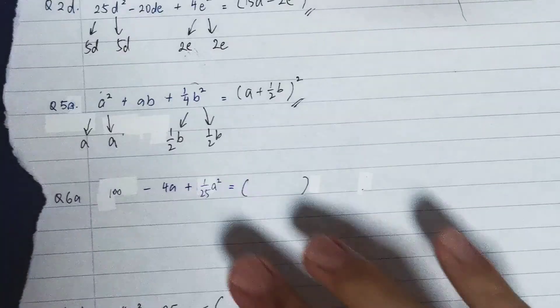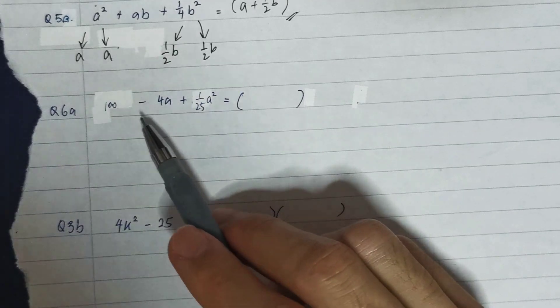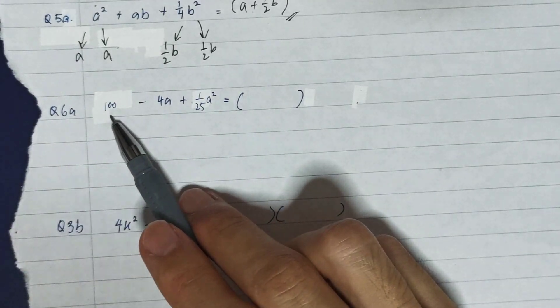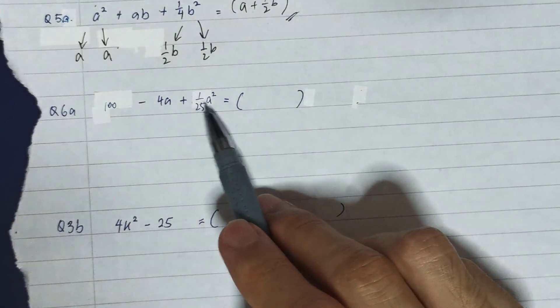Let's look at 6a. For 6a, it's slightly different. Now we have the numbers in front, and the one with the alphabet squared is at the back. But it doesn't matter, it's still the same thing.